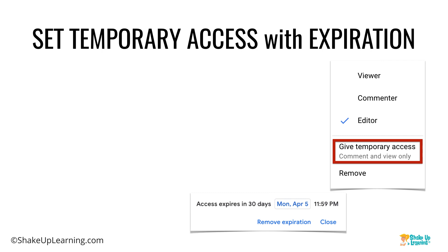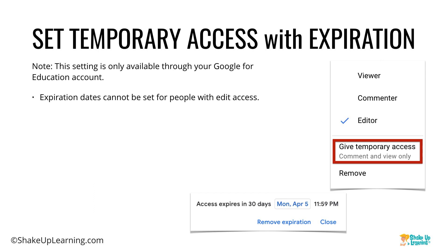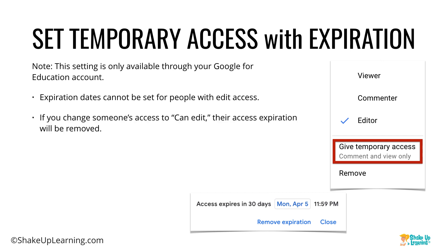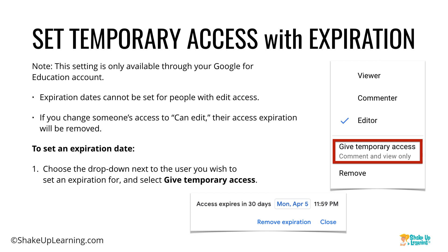You also have the ability to set temporary access with an expiration date — but this is only available in a Google for Education account, not a personal account. A couple of quick notes: expiration dates cannot be set for people with edit access; if you give an editor temporary access, they're taken down to comment level, which kind of defeats the purpose. If you change them back to edit, their expiration will be removed. To set an expiration date, click the drop-down next to their name in the share window, click 'Give temporary access,' choose how long to grant access, and click save.